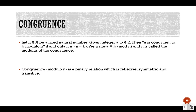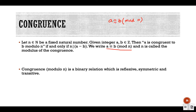We write this fact with a special symbol and read it as: a is congruent to b modulo n. So this is the notation — a is congruent to b with modulo n.